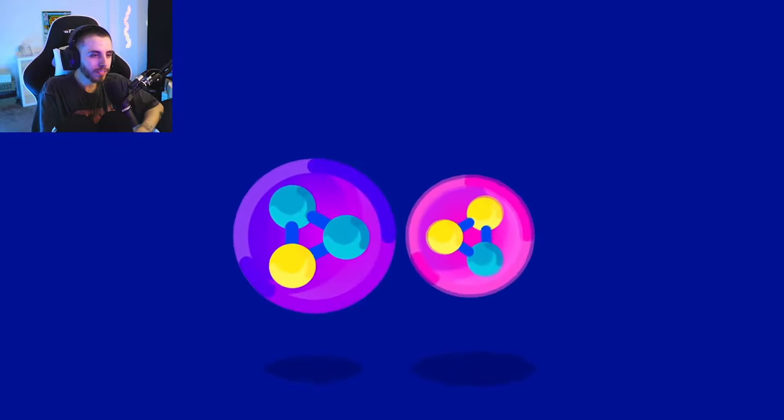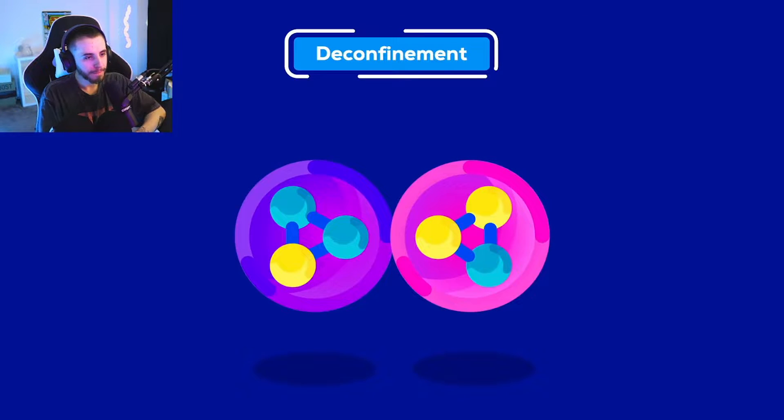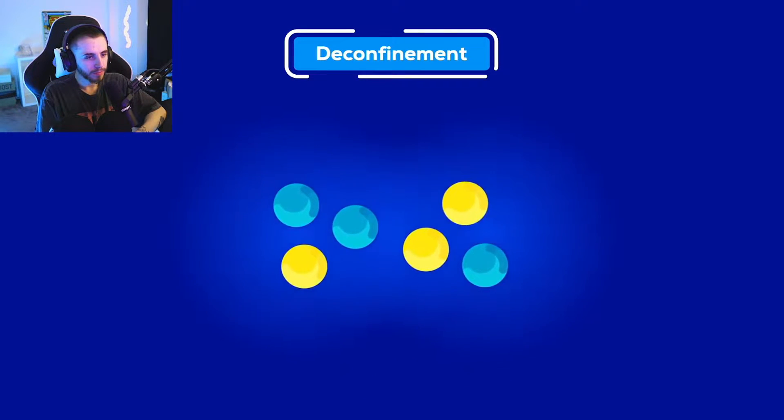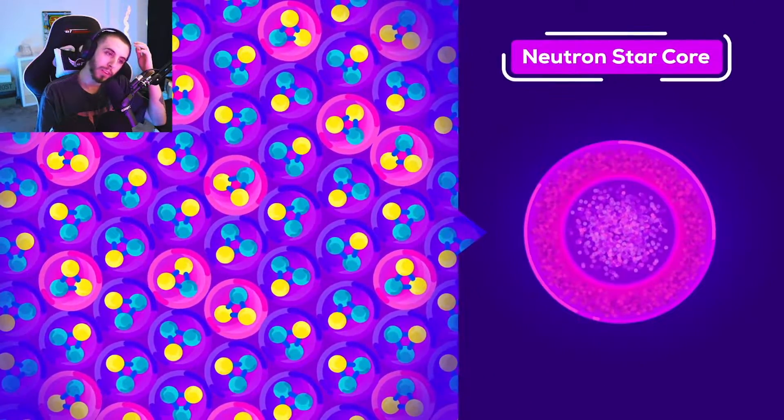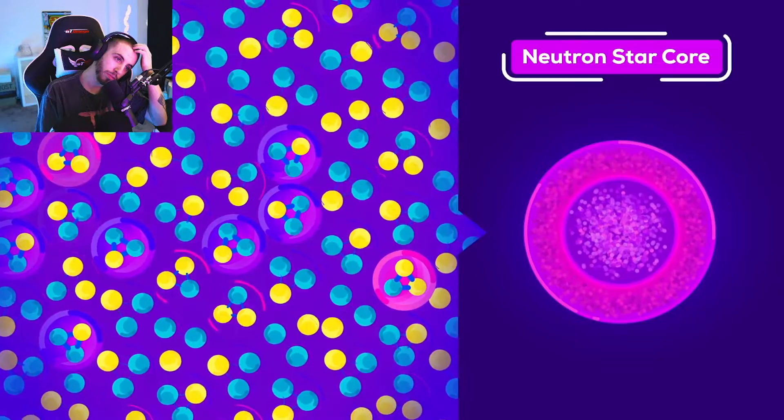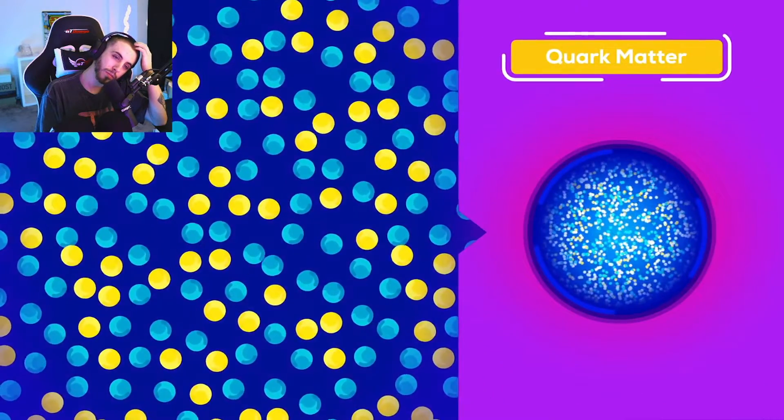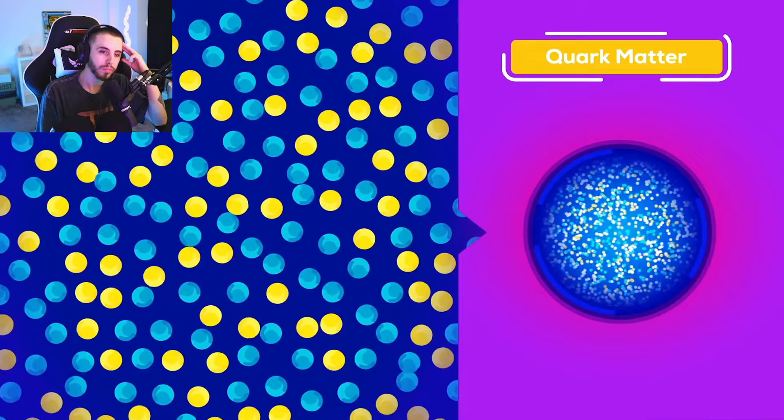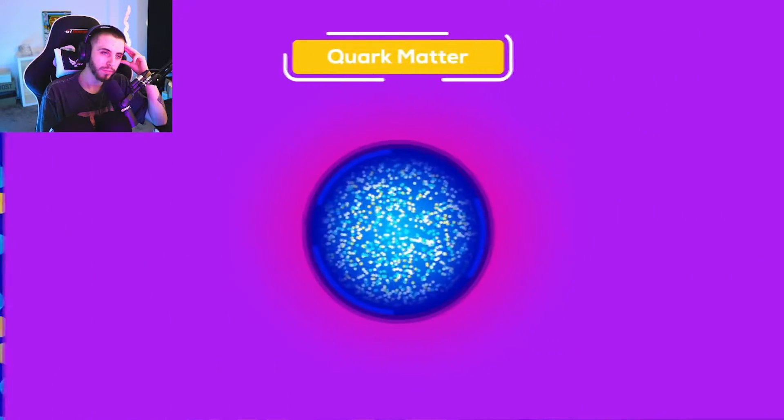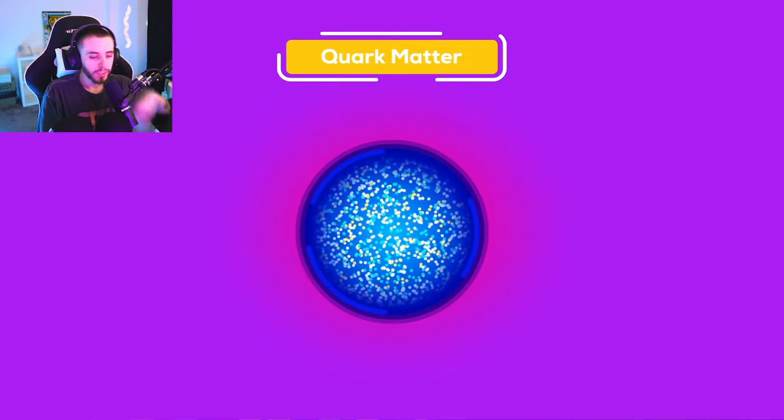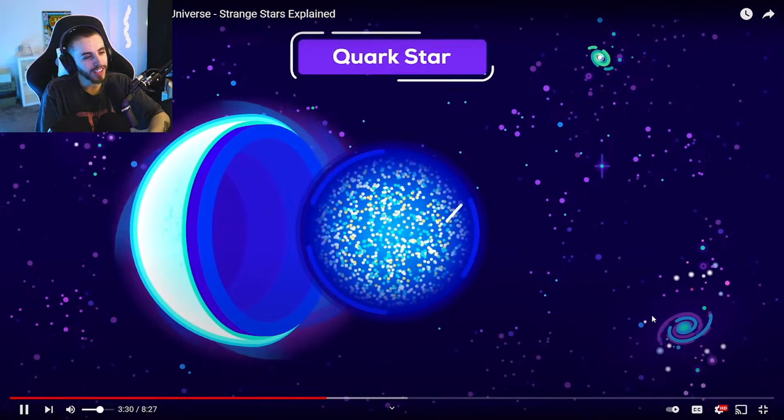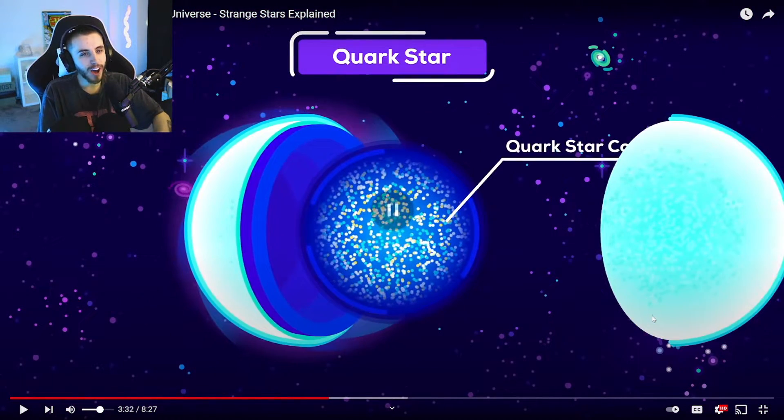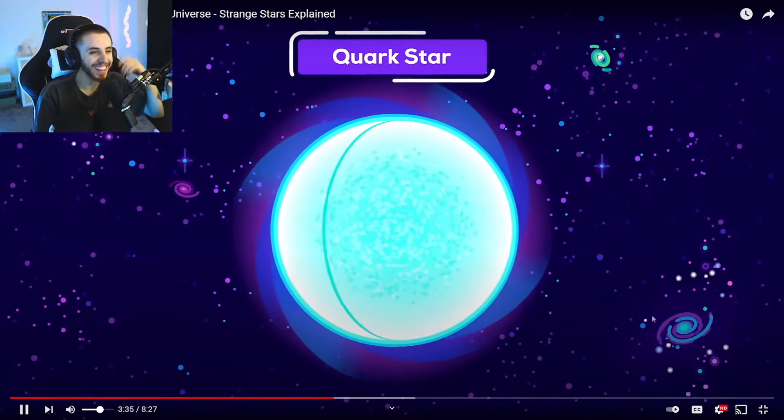One hypothesis is that inside a neutron star core, protons and neutrons deconfine. All the particles crammed shoulder to shoulder dissolve and melt into a sort of bath of quarks. Uncountable numbers of particles become one giant thing made purely from quarks: quark matter. A star made from... You know what? At this point, let's just call it the quark star. It may not look any different than a regular neutron star.